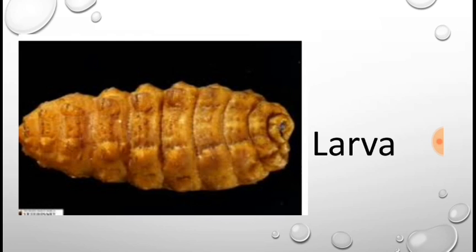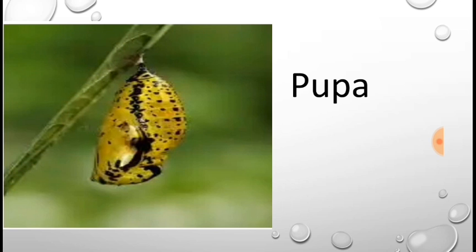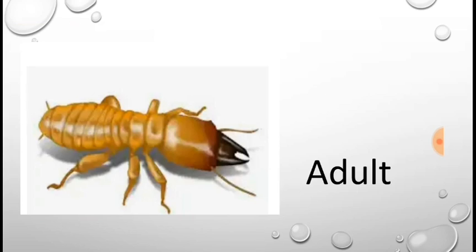The third stage is pupa. The larva will stop eating and moving. Inside the pupa, the larva's body will completely change into a full-grown adult.